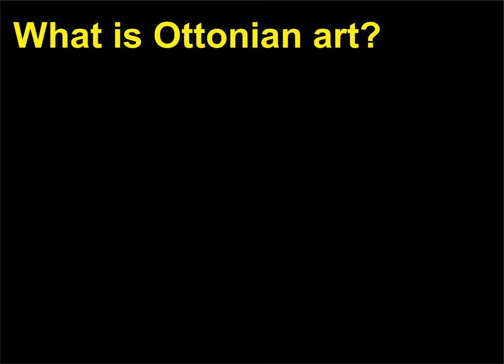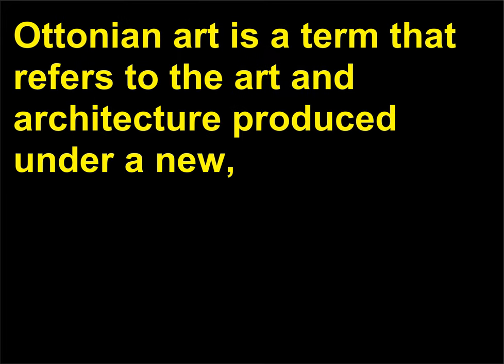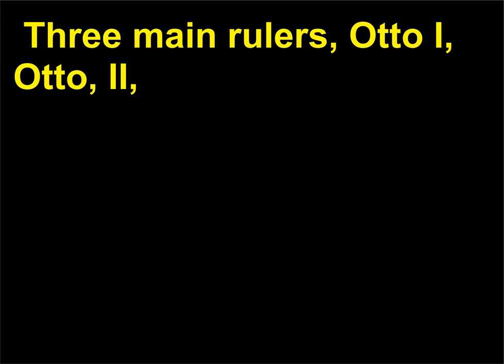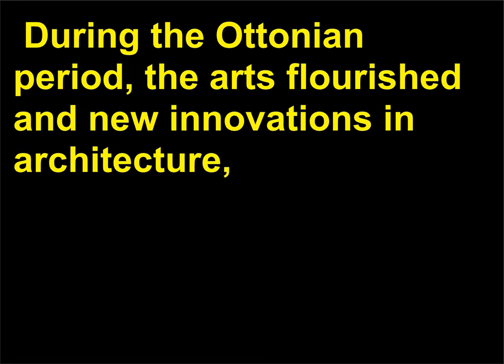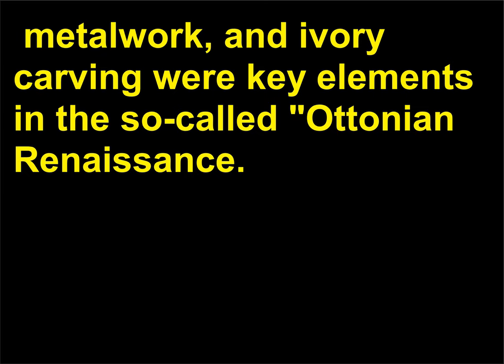What is Ottonian art? Ottonian art is a term that refers to the art and architecture produced under a new, powerful dynasty that established itself in the eastern portion of the Holy Roman Empire after the power of the Carolingian dynasty had faded. Three main rulers — Otto I, Otto II, and Otto III — ruled from 919 to 1002 and were based in modern-day Germany. During the Ottonian period, the arts flourished and new innovations in architecture, metalwork, and ivory carving were key elements in the so-called Ottonian Renaissance.